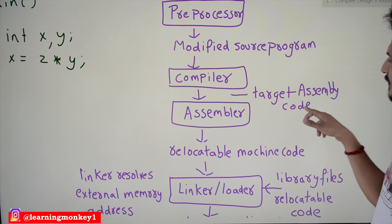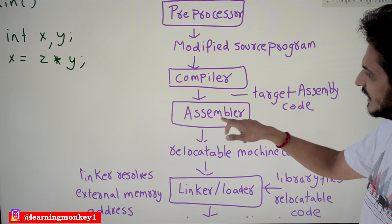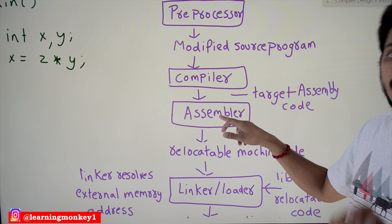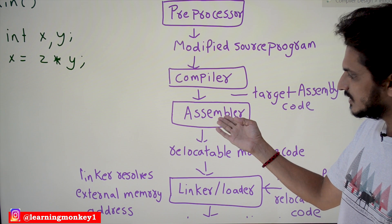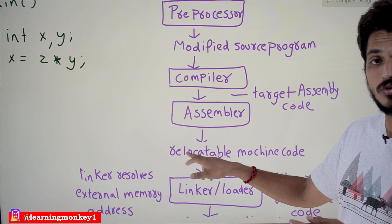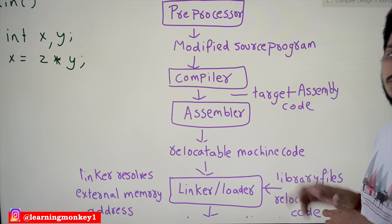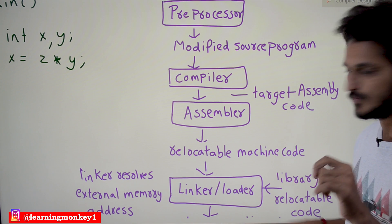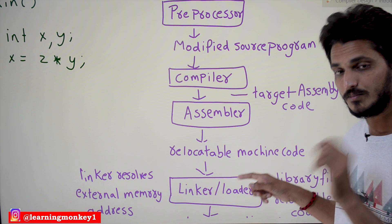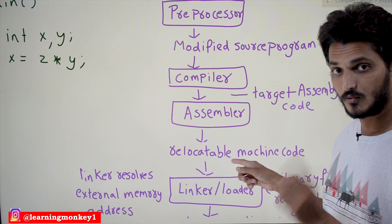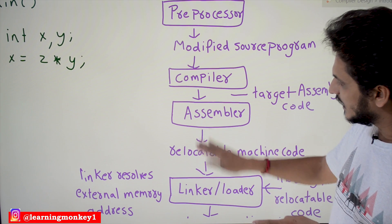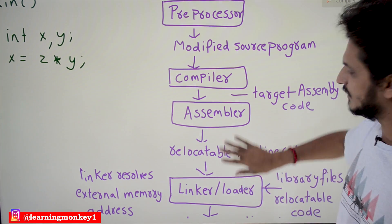After the target assembly code, this is given as input to the assembler program. For that program, it will take this and convert that into relocatable machine code. We discussed about relocatable machine code - what's the meaning and how we do that. That intuition has been provided in the last class. Finally we will get relocatable machine code.